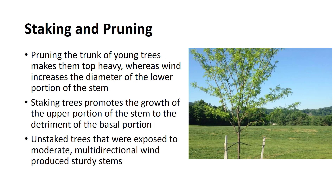Staking and pruning are strong modifiers of plant form and structure because they are closely related and interact with wind and will be discussed together. Pruning the stem or trunk of young trees induces a preferential distribution of the photosynthates toward the upper portions of the stems, making it top-heavy.